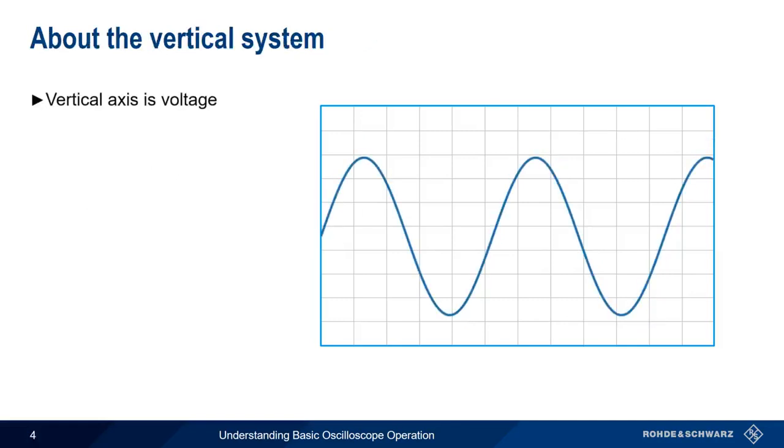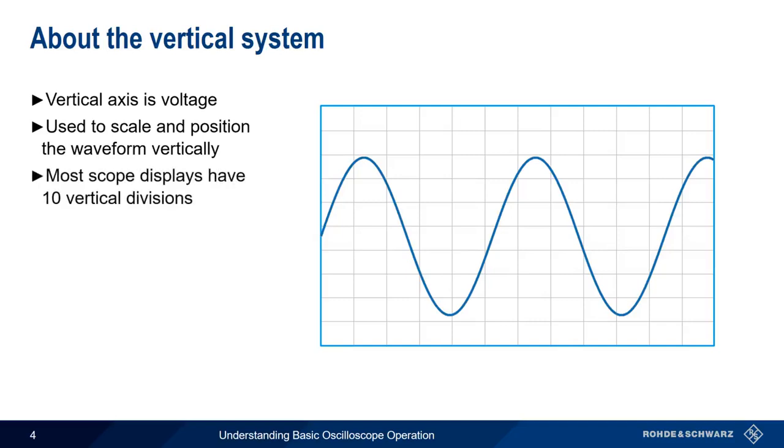Remember that our vertical axis shows voltage as a function of time. A very common task when using a scope is scaling the displayed waveform and changing its vertical position. Most scope displays have 10 vertical divisions, and in order to scale the waveform, we use the volts per division control, which controls the amplification or attenuation of the input signal.